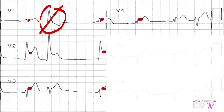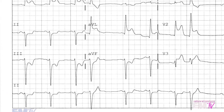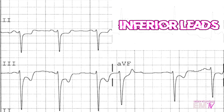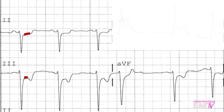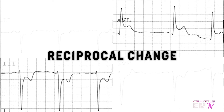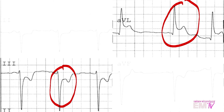Very, very concerning. Let's go ahead and take a look at the inferior leads next. In my inferior leads — leads 2, 3, and AVF — I'm seeing significant amounts of ST segment depression. However, if you look at lead 3 and AVL, this is what's known as a reciprocal change. What that means is you are seeing an exact mirror image of lead 3 and AVL. This is very concerning for a lateral MI. Let's go ahead and take a look at those leads now.